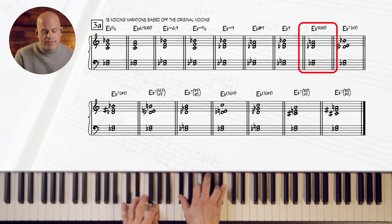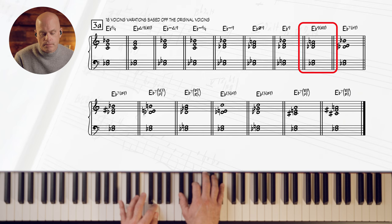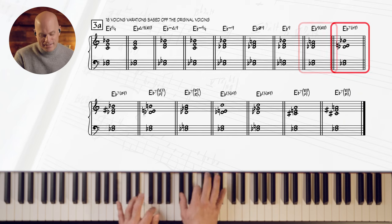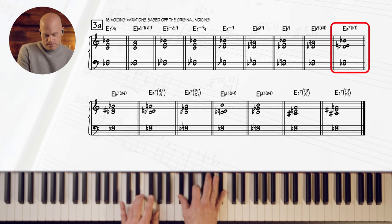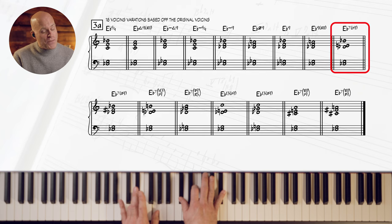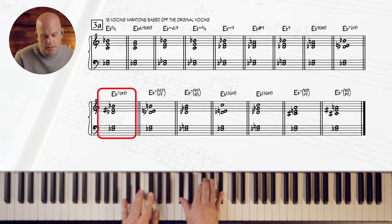E flat seven sharp nine. E flat seven flat nine. I'm going to do them in order. E flat seven sharp nine. E flat seven flat nine flat thirteen.